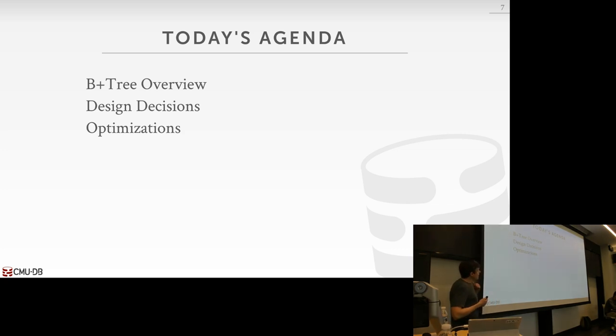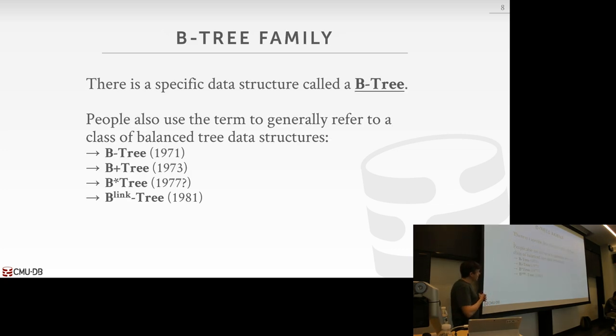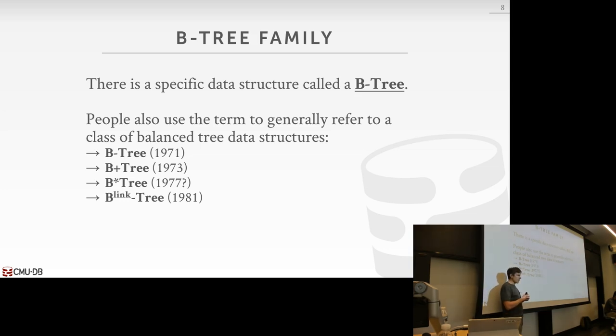So the things we're going to talk about today is an overview of what a B+ tree is. Then we'll spend some time discussing the implementation details we have to be concerned with when we build out our index. And then we'll finish up talking about some additional optimizations that real systems actually do to make this thing useful in practice. The first thing we need to address is what is a B+ tree and how does that relate to a B tree?